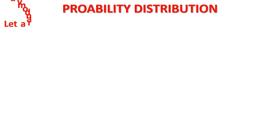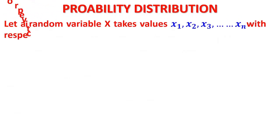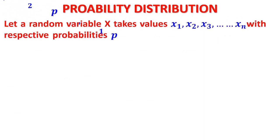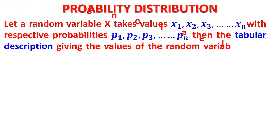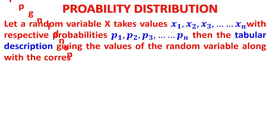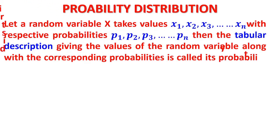Probability distribution: if a random variable X takes values x1, x2, and so on to xn with corresponding probabilities p1, p2, p3, and so on to pn, then the tabular description giving the values of the random variable along with the corresponding probabilities is called its probability distribution.